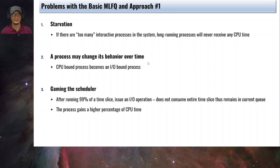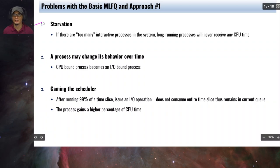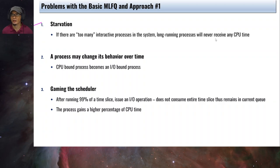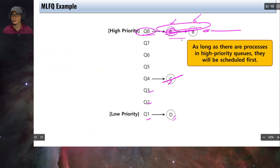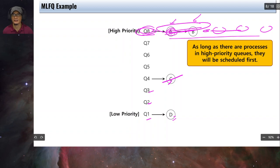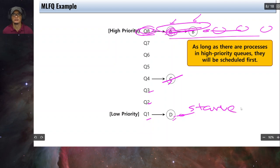Are there problems that might arise given this scenario? Yes, there are actually three problems. The first one is called starvation. In this problem, if there are too many interactive processes in the system, long-running processes will never receive any CPU time. As long as the queue in Q8 is full — meaning other processes keep arriving — the low priority processes will never get executed, and thus they will starve.